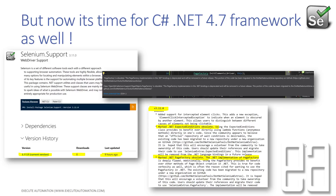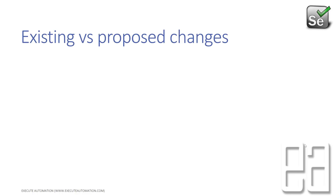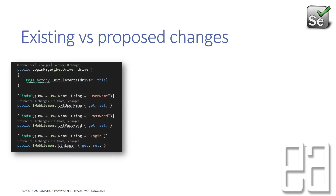Why is this change going to affect our current code? They say there is no benefit to PageFactory over other methods of page object creation in .NET. This is true for code verbosity as well, which is often the reason cited for wanting to use PageFactory in .NET. The fancy attributes had real problems that were not verbose, whereas using .NET's own object creation is more verbose — telling us exactly what exception is happening. That's why we sometimes get a 'cannot debug due to source not found' exception in Visual Studio C#.